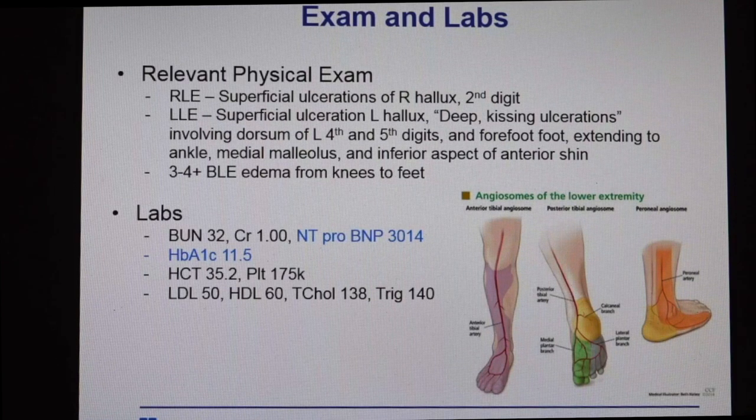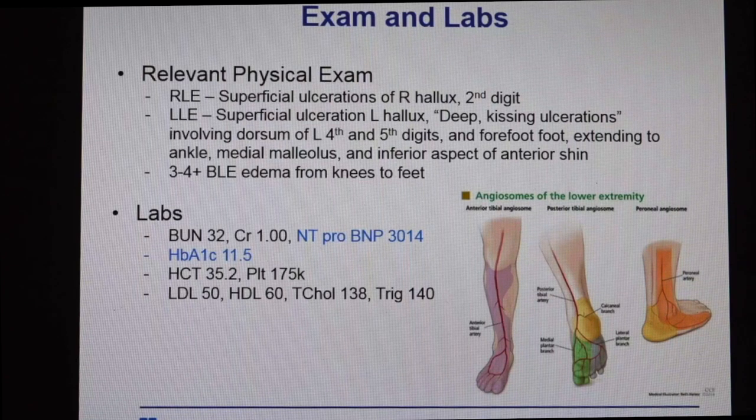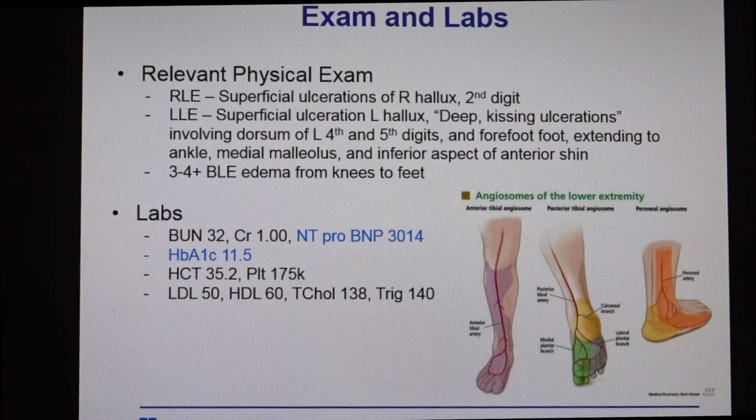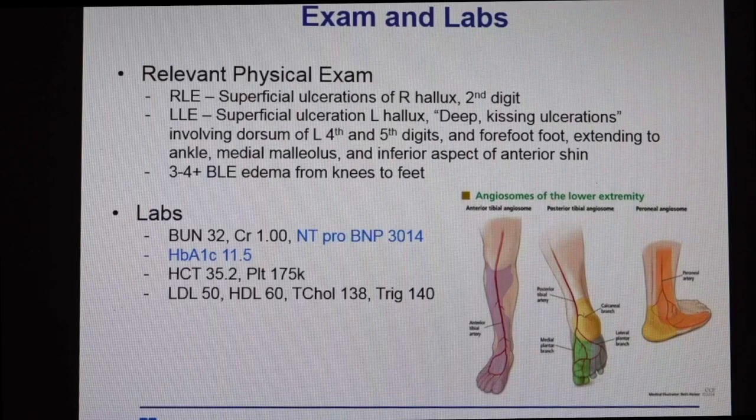I don't have pictures of the wounds, but let me paint a picture. Her left lower extremity was severely ulcerated from the left hallux to the dorsum of the foot, involving casing alteration of the fourth and fifth digits. This was rather deep and even involved the anterior aspect of the shin. The right lower extremity had superficial ulceration of the right hallux — pretty minor — and 3 to 4+ lower extremity edema from the knees down to the feet. The wound was in the angiosome of the dorsalis pedis and anterior tibial predominantly, but quite extensive overall.